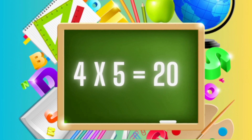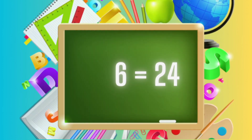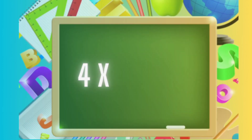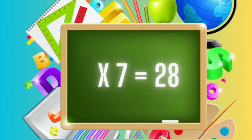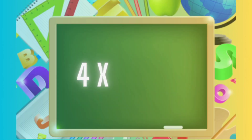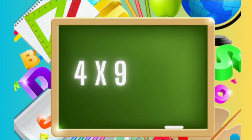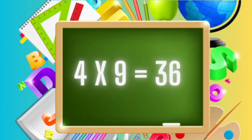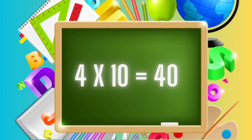Four fives are twenty. Four sixes are twenty-four. Four sevens are twenty-eight. Four eights are thirty-two. Four nines are thirty-six. Four tens are forty.